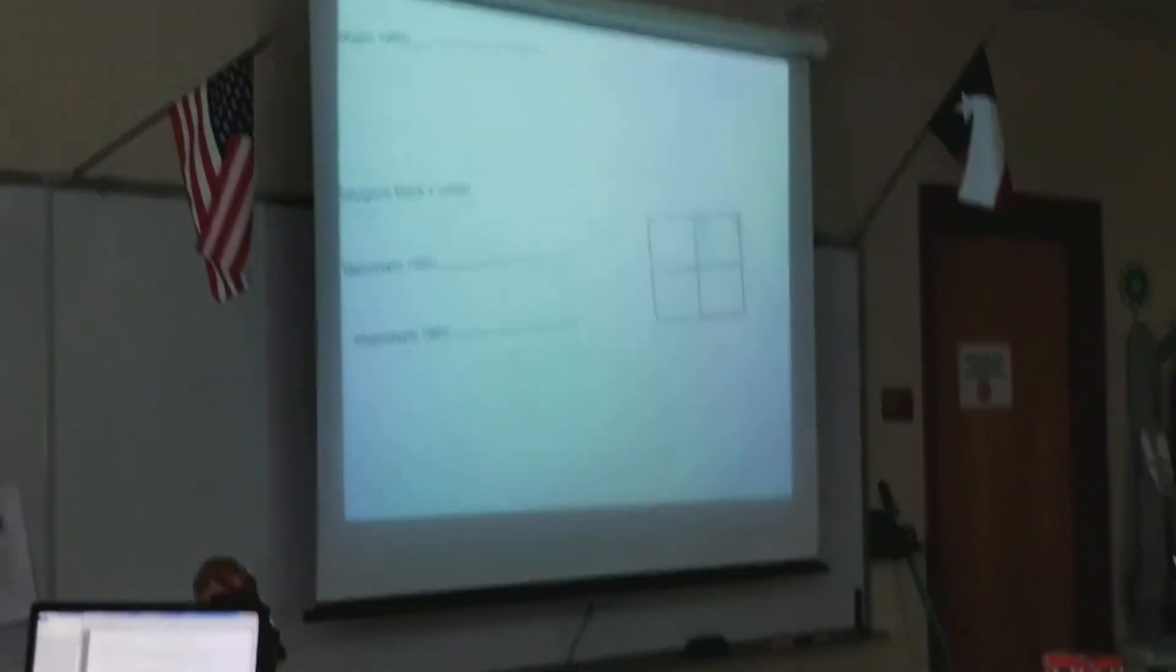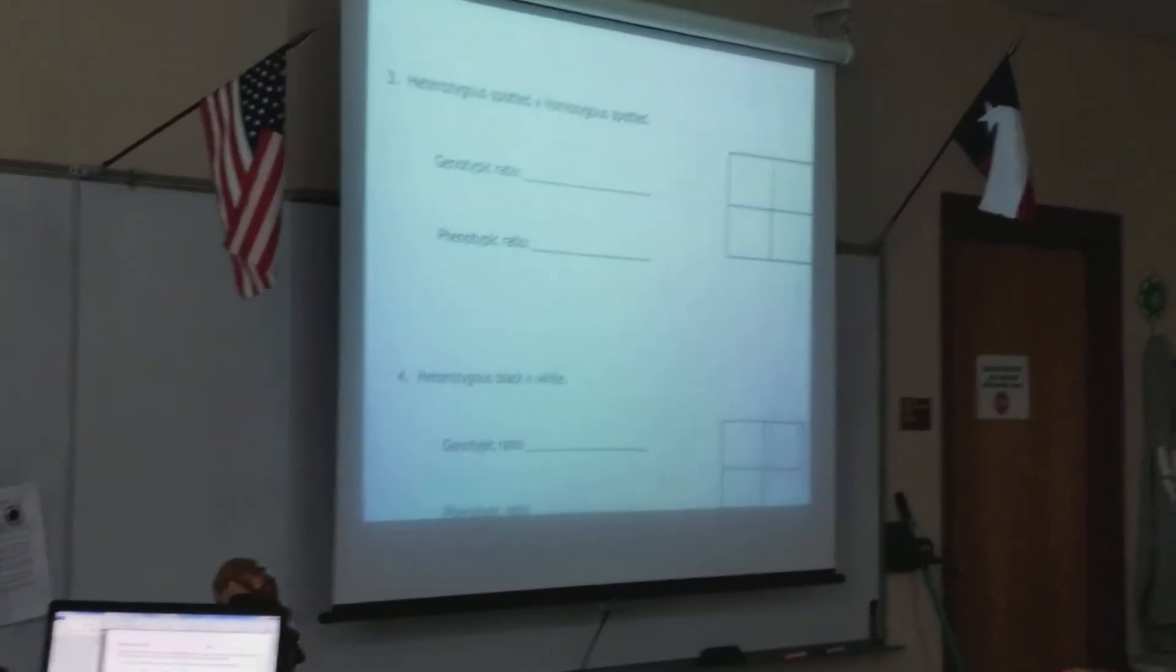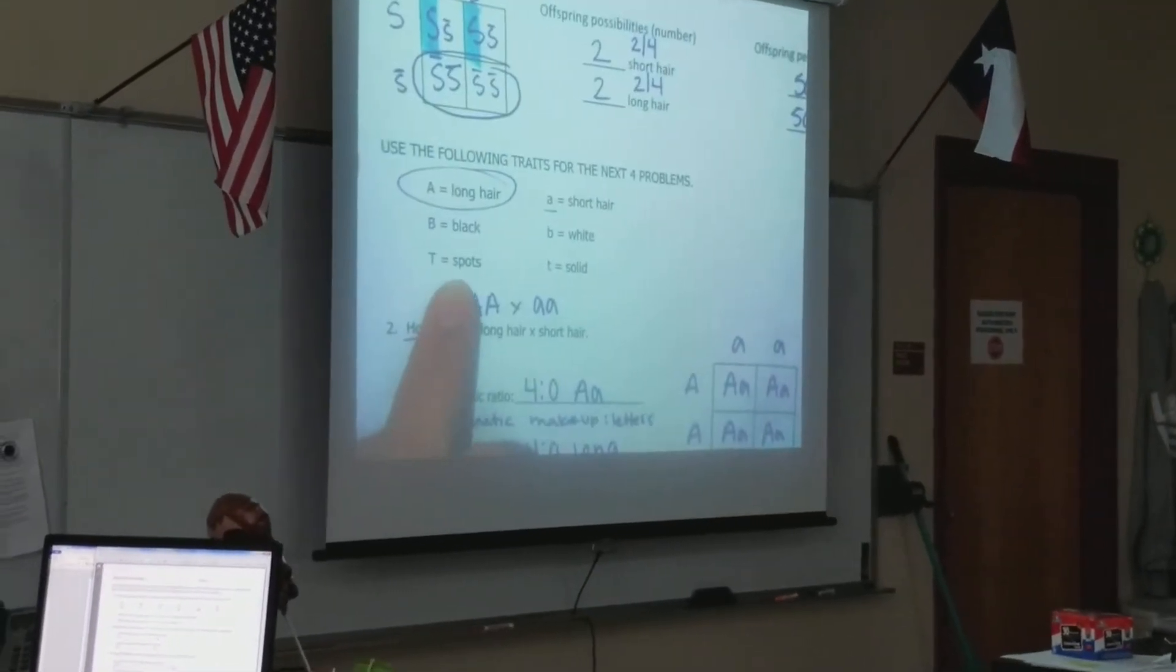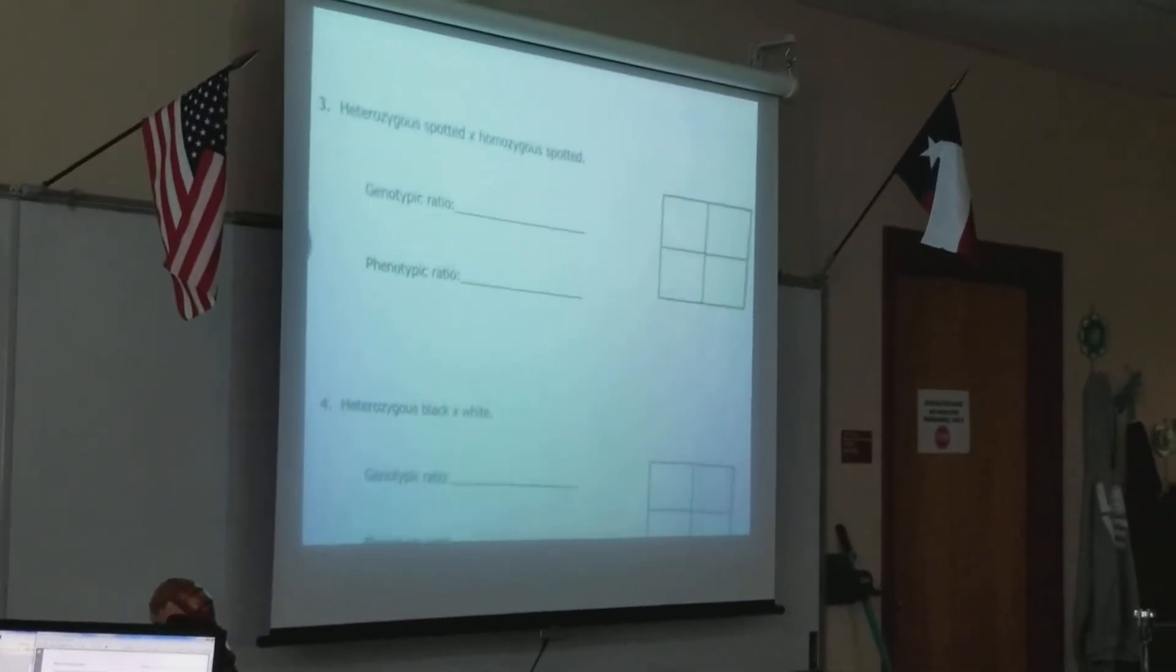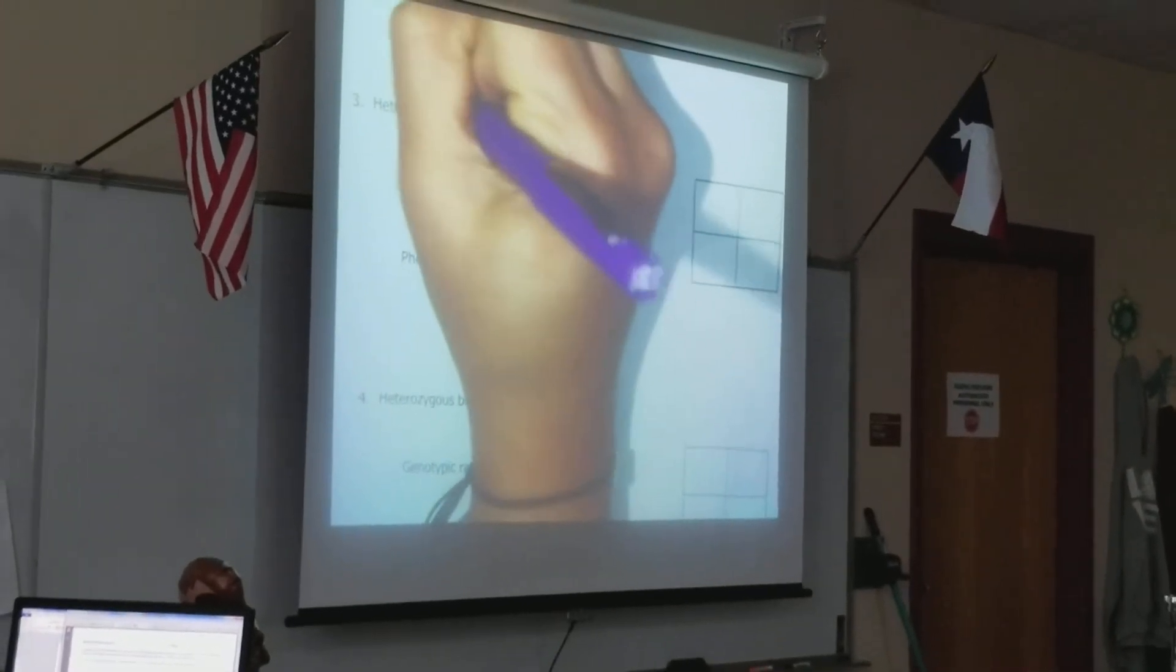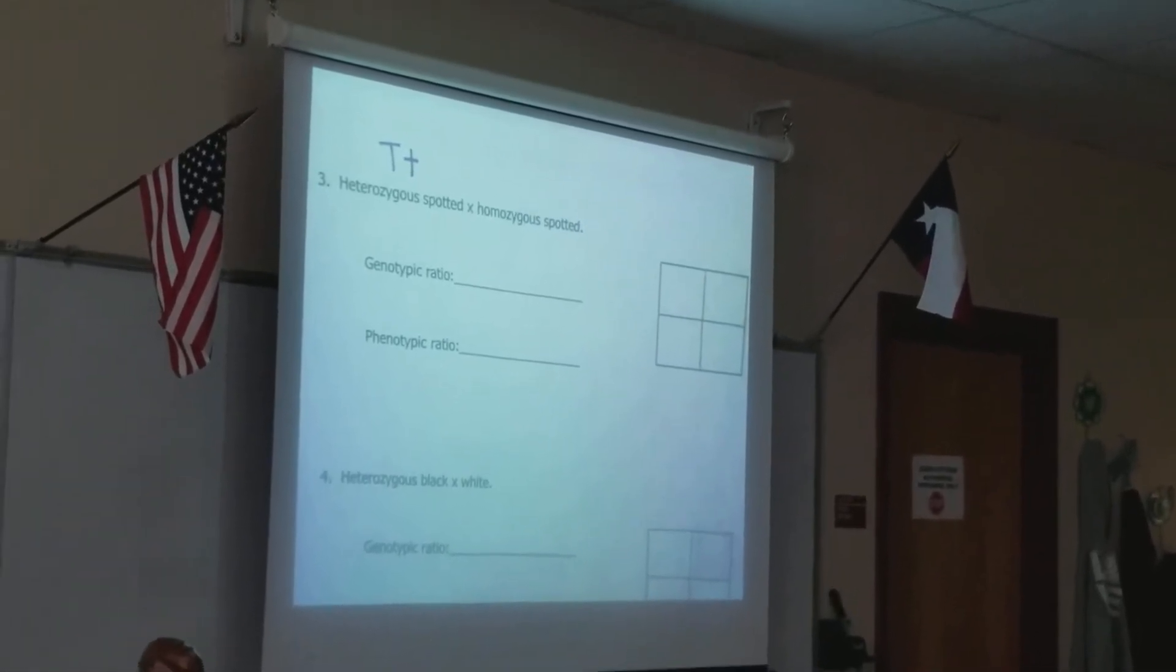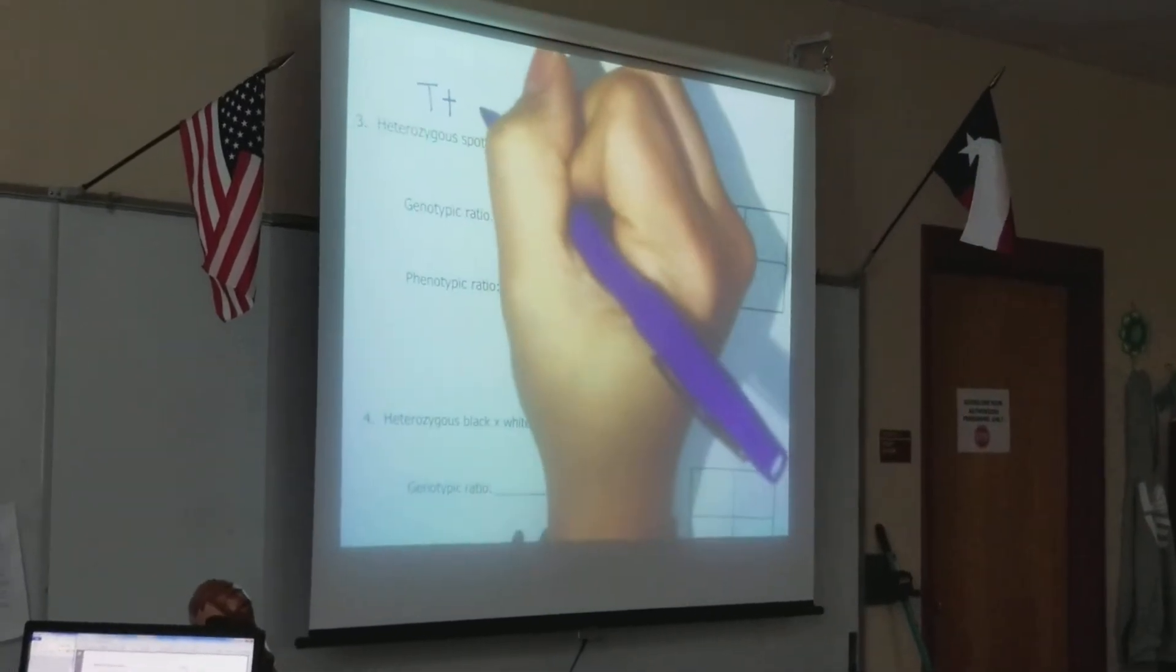So now let's do the two in the back before you guys kind of go off and do your homework. So heterozygous spotted. Spotted is going to be represented by the letter capital T because spotted is dominant, right? So if I have heterozygous, I have to have one of each. Remember I said always write your parent's genotype before you start messing with that Punnett square.